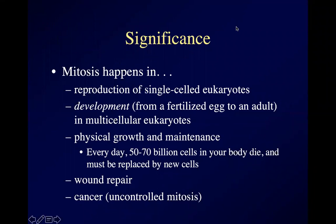It is through mitosis that development happens — which means everything between a fertilized egg and an adult. You got from a single fertilized egg in your mama's uterus all the way to the fine upstanding young adult that you are by an awful lot of mitosis. That's how you got from one cell to roughly 37 trillion cells. Lots and lots of mitosis.